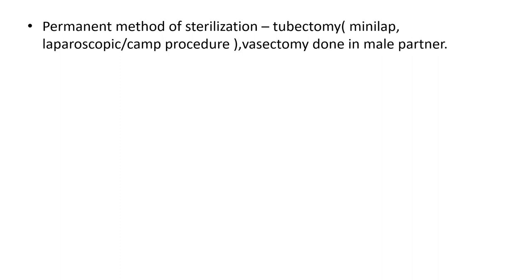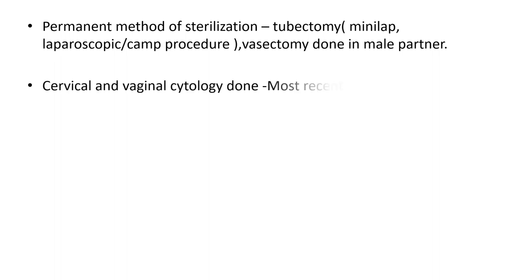When dealing with patients who are 35 or 40 plus, ask about permanent methods of sterilization or tubectomy, which could be done through a mini-laparotomy or laparoscopic approach. While doing the examination, you may look for those scars. Also ask about vasectomy done in the male partner, and then of course cervical and vaginal cytology done.